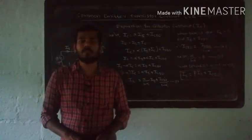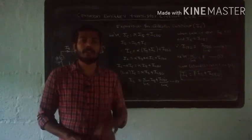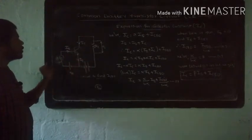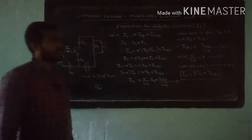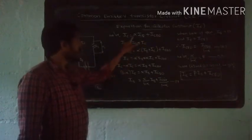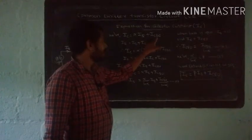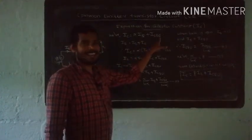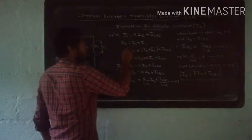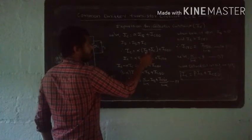Next, we derive an expression for collector current in Common Emitter transistor configuration. ICBO is the collector-base current when the emitter is open — that is the leakage current. Starting from IE equals IB plus IC, we get IC equals alpha times IE plus ICBO.